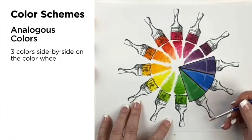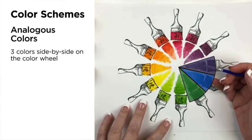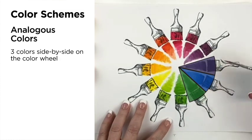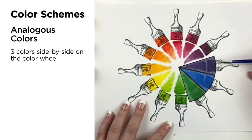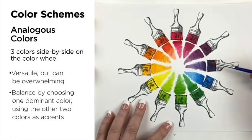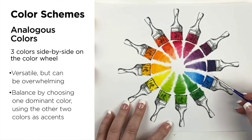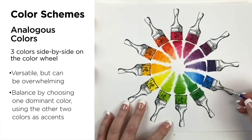An analogous color scheme is three colors that are side by side on the color wheel, like green, blue, and purple. This color combination is also versatile, but it can be a little overwhelming. To balance an analogous color scheme, choose one dominant color and then use the others as accents.